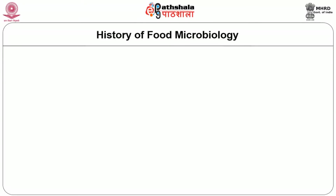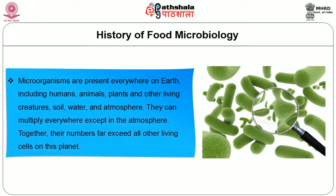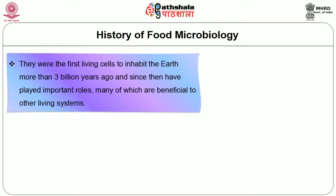Let us see the history of food microbiology. Microorganisms are present everywhere on earth including humans, animals, plants and other living creatures, soil, water and atmosphere. They can multiply everywhere except in the atmosphere. Together, their numbers far exceed all other living cells on this planet. They were the first living cells to inhabit the earth more than 3 billion years ago, and since then they have played important roles, many of which are beneficial to other living systems.